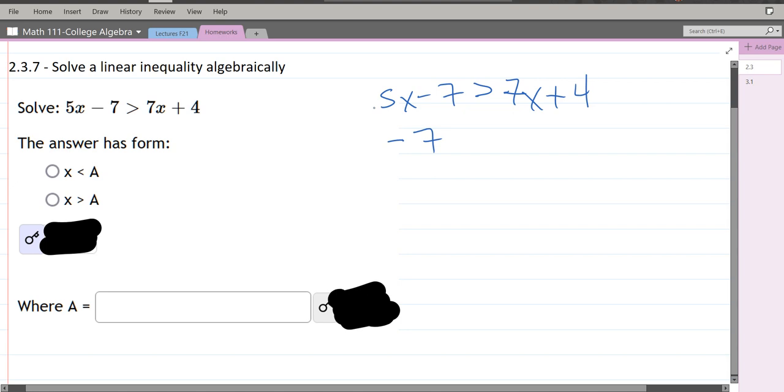So subtract 7 minus 5 is 2. Now we're going to collect all the numbers on the opposite side, so it's negative 7 subtract 4, which gives us negative 11 greater than 2x. Almost there.